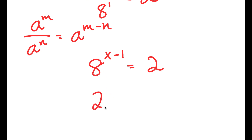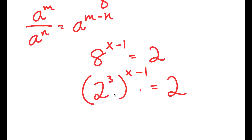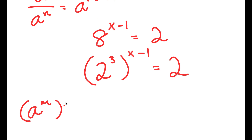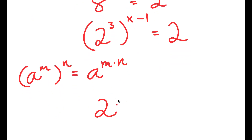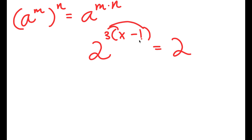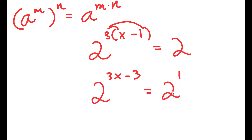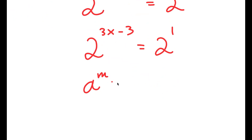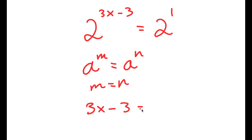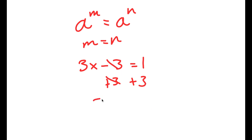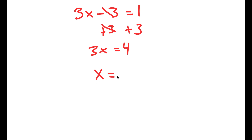Now, 8 is the same thing as 2 to the power of 3, so I get 2 to the power of 3 to the power of x minus 1 is equal to 2. If I have something in the form a to the power of m to the power of n, this equals a to the power of m times n. So 2 to the power of 3 to the power of x minus 1 is the same as 2 to the power of 3 times x minus 1. Distributing the 3 gives 2 to the power of 3x minus 3 equals 2, which is 2 to the power of 1. Since the bases are equal, 3x minus 3 equals 1. Adding 3 to both sides gives 3x equals 4, so x equals 4 over 3.